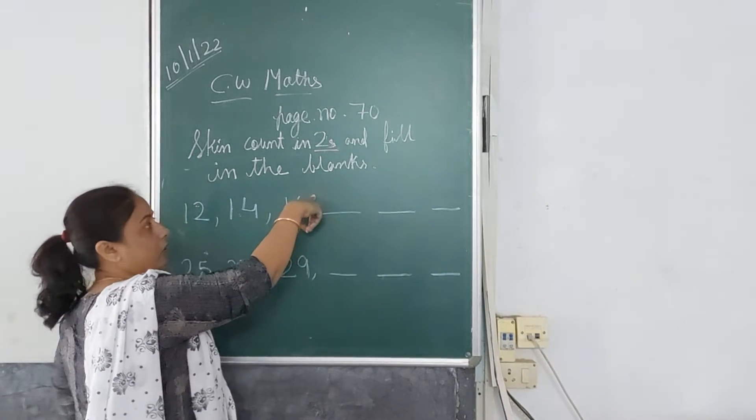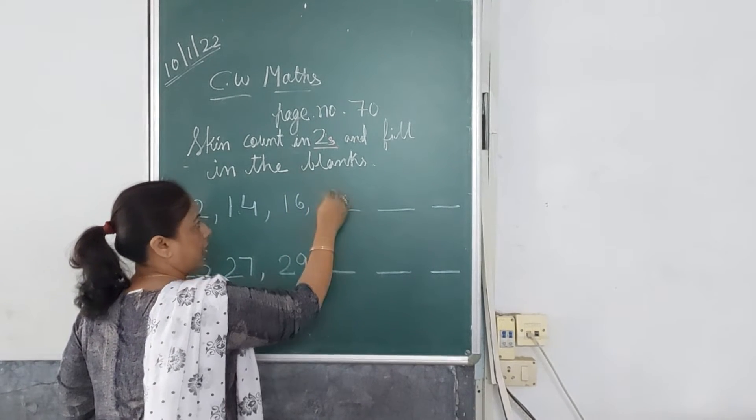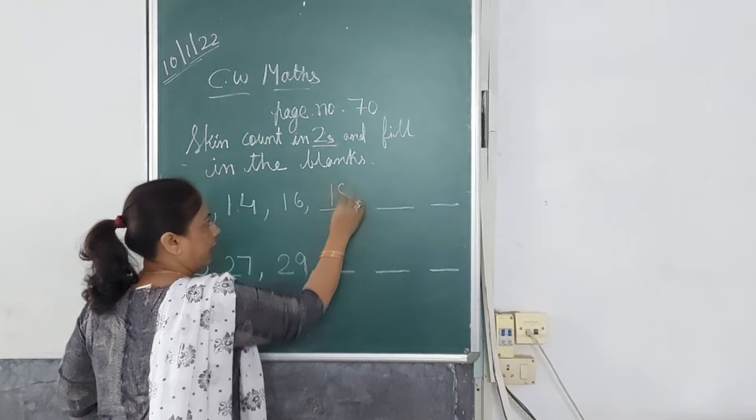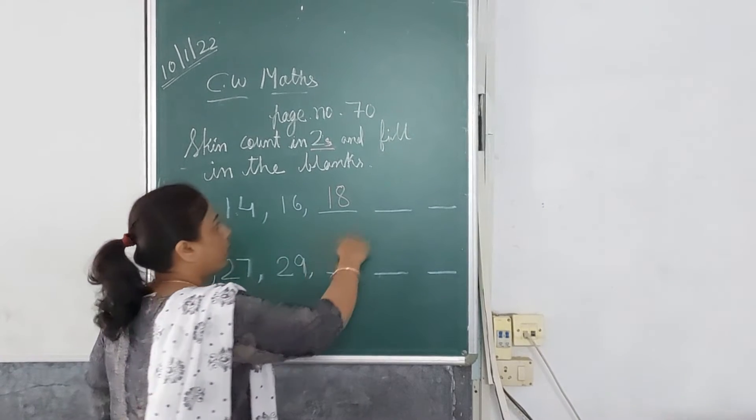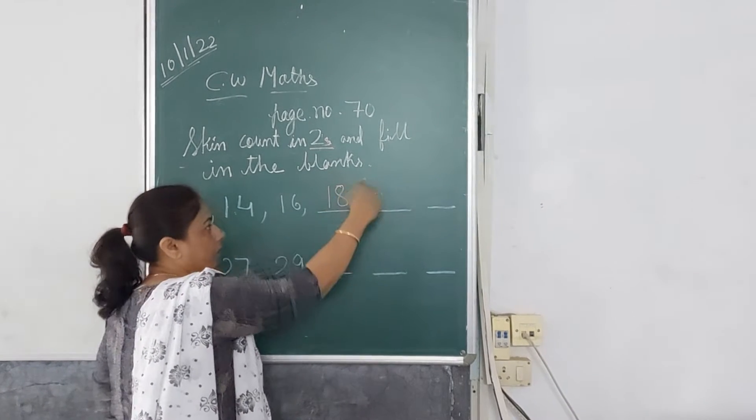We have to read number. We will do 17. 17. We will sort okay. 80. Number. We will write. Okay. Then we will do. 90.